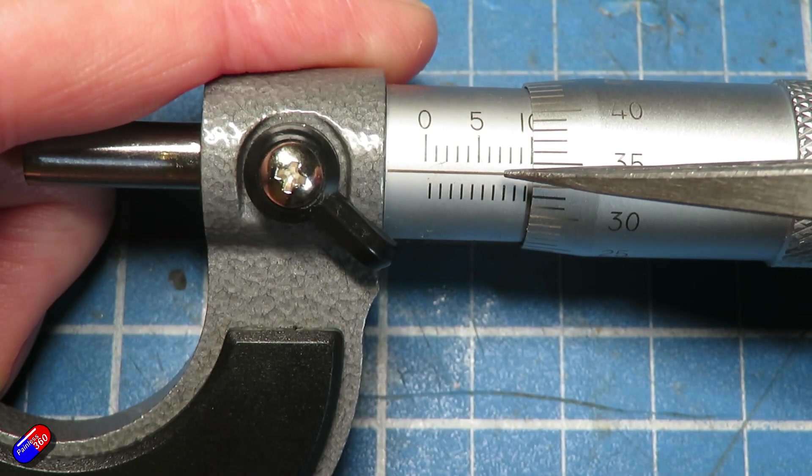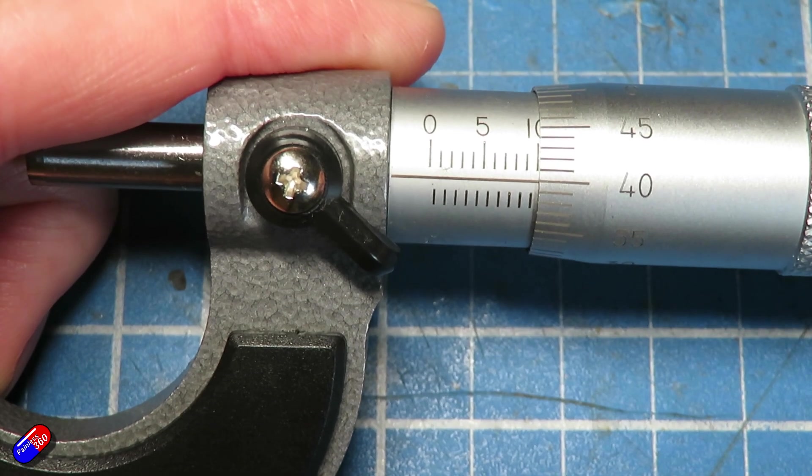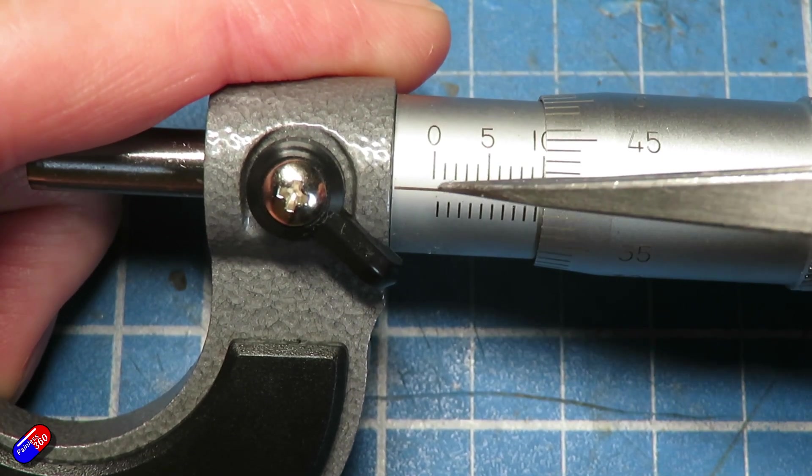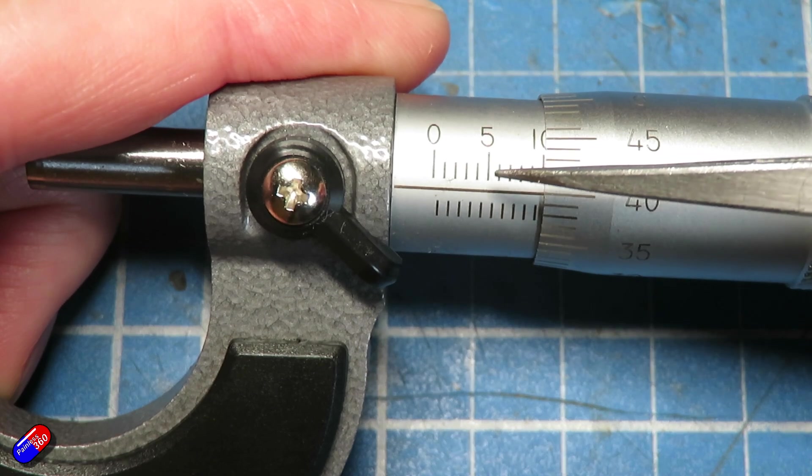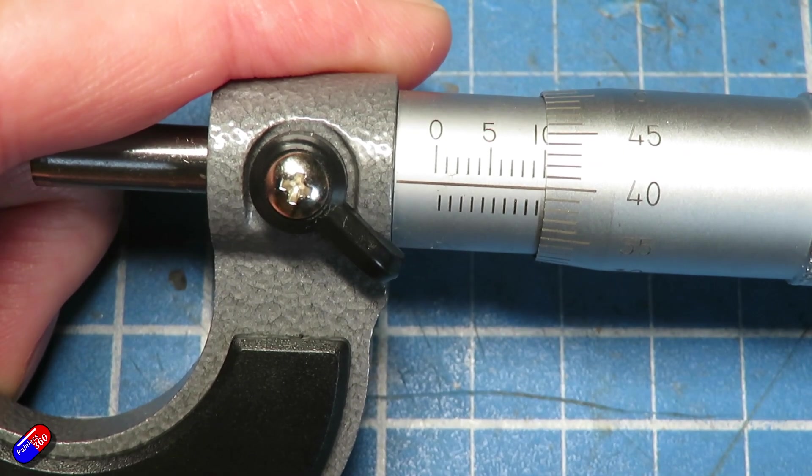This line in the middle is the datum line - that solid line that goes across - and that's what we're going to read against. The top line is actual millimeters: 0, 1, 2, 3, 4, 5, and the lines at the bottom are half millimeters.